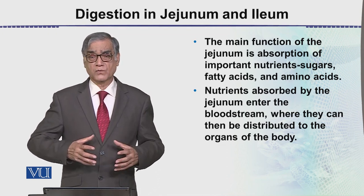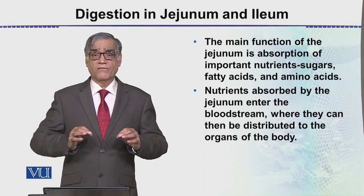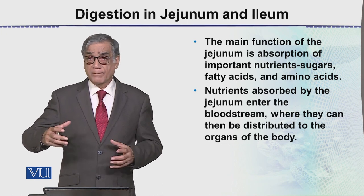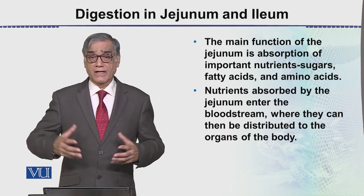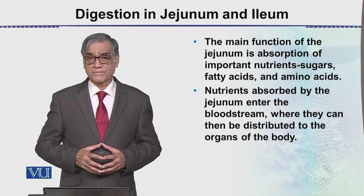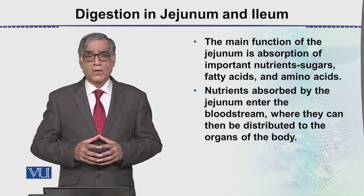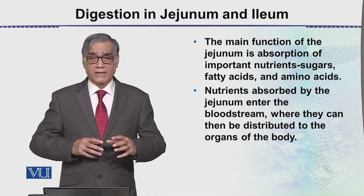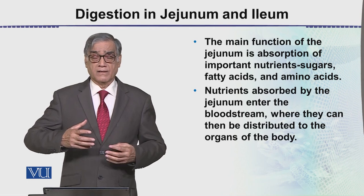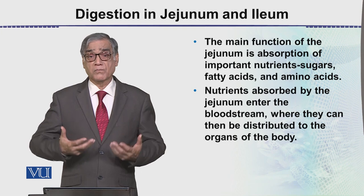This is what the food has to be — absorbed into the cell. Inside the cell there is new machinery: glycolysis, the Krebs cycle, and energy production takes place.